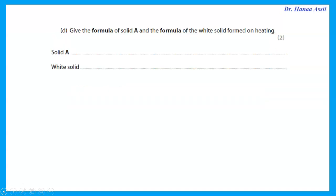Give the formula of solid A and the formula of the white solid. Solid A is barium nitrate, Ba(NO₃)₂. When heated, the white solid that remains is barium oxide, BaO.